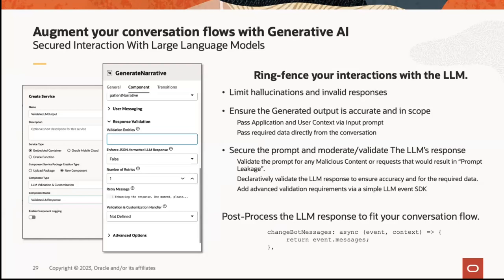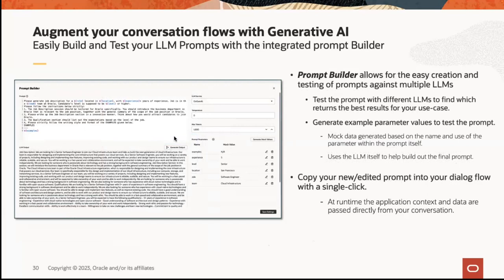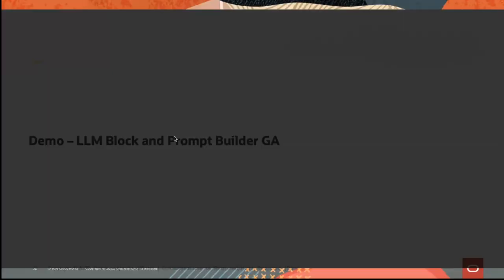There's a validation framework built into the large language model blocks to validate whether the LLM response conforms to what you asked it to do. For example, you can create a validation entity that ensures the large language model response contains all required items. If you ask the LLM to generate something with A, B, C, and D, but it only generates A, B, and C — the validation framework can capture that. There's also a rich prompt builder that allows you to engineer your prompt and test the output.